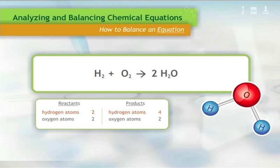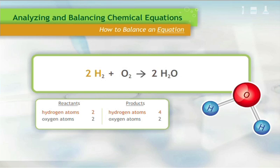Now look at the number of atoms per side. The number of oxygen atoms on each side is balanced. However, the hydrogen atoms are now unbalanced. To balance them, we can multiply the hydrogen atoms on the left by two. To do so, we must add a coefficient of two in front of H₂.